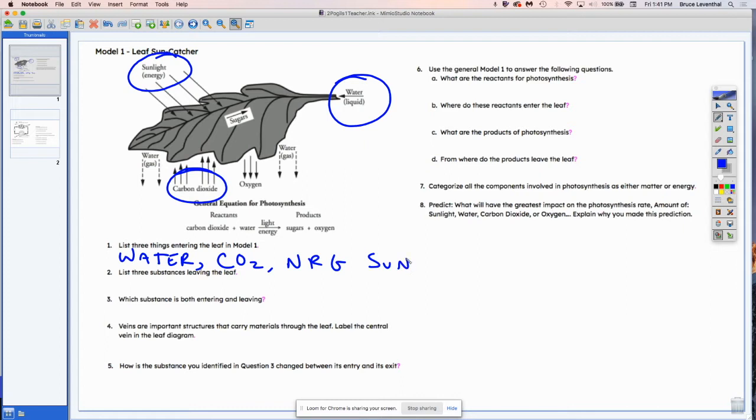In the second question, it says, list three substances that are leaving the leaf. So here we've got to follow the arrows. And so we have sugar that is leaving the leaf. We have water also leaving the leaf. And the other thing that is leaving the leaf is oxygen.